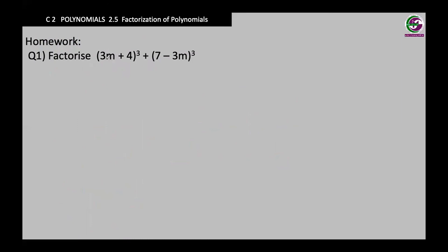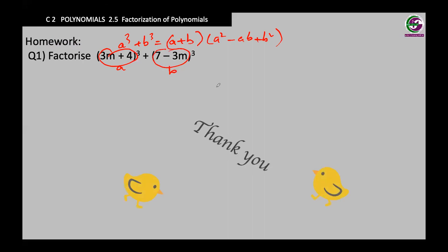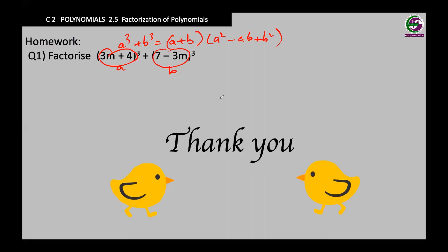For the homework, consider this whole expression as a constant plus another constant. Compare it to a cube plus b cube — the first bracket with plus and the second bracket with a minus in the middle. Consider the two parts as a and b and then expand. That's all for the lesson and the whole chapter. Hope the lessons are clear to you — have a wonderful day, keep practicing, best wishes.